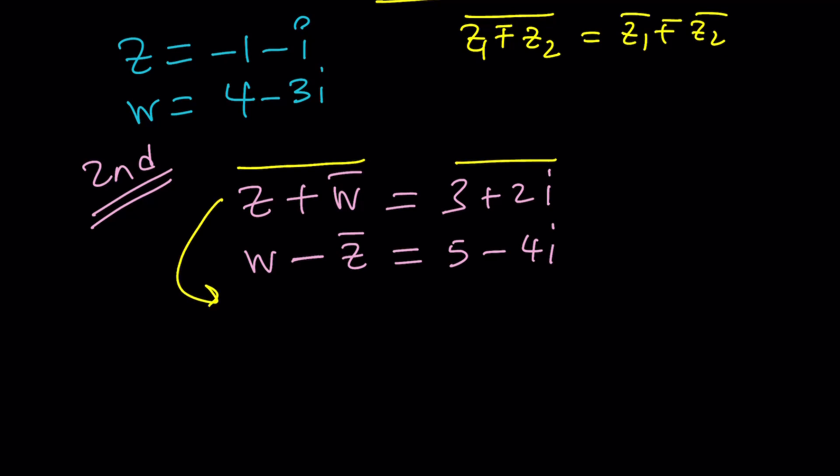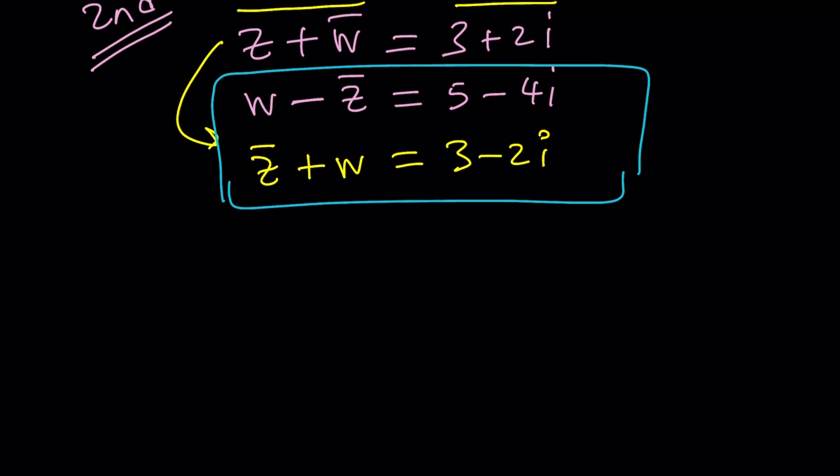So we can apply that property and conjugate both sides in the first equation. That will give us Z bar plus W. Double bar is going to give us W. And then on the right hand side if you bar 3 plus 2i you're going to get 3 minus 2i. Now when these two equations are taken together what do you notice? We only have two variables. Isn't that awesome? Now we can work on these two equations.